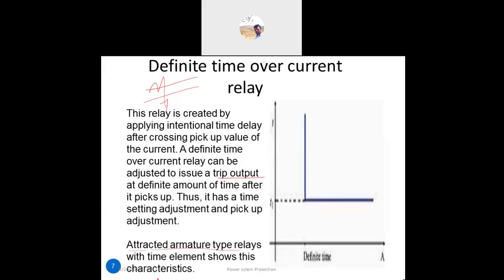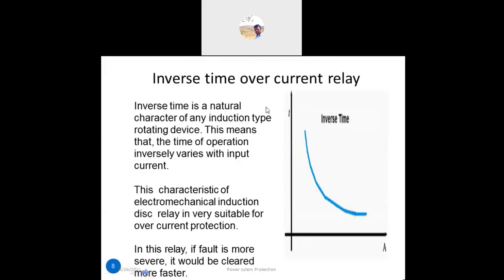Next is the inverse time overcurrent relay. This is the natural characteristic of any induction-type rotating disc. The time of operation inversely varies with the input current. These characteristics of the electromechanical induction disc relay are very suitable for overcurrent protection.